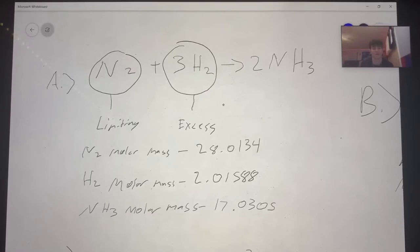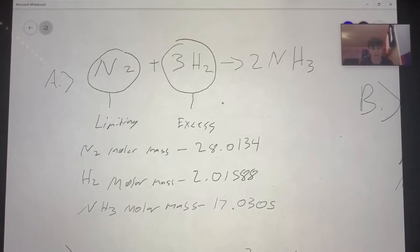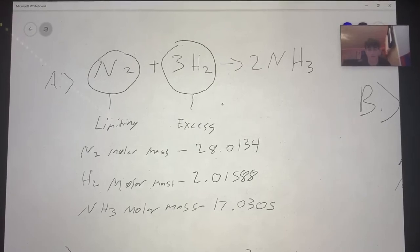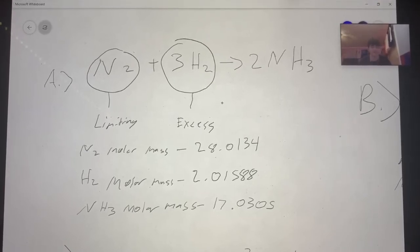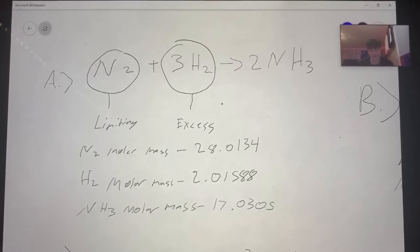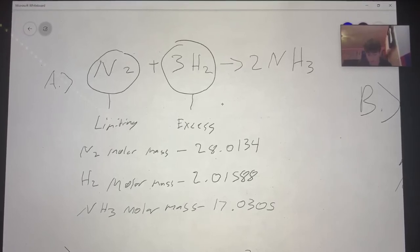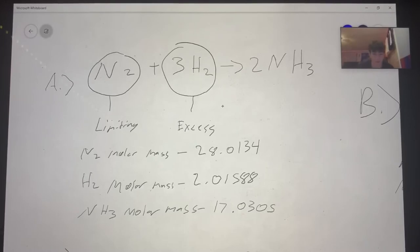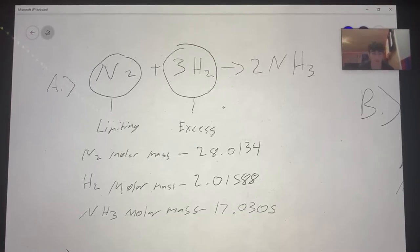The molar mass of N2 is 28.0134. We found this by finding the atomic mass of nitrogen, which was 14.006, and multiplying it by two since there were two nitrogens.